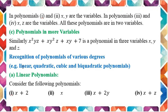Now we are moving to the degree of polynomials and how we can name them. If the highest degree of a variable is 1, then we will call it linear. Consider the following polynomials: x plus 2; x; x plus 2y; and x plus y. You can observe that in all these examples the exponent of the variable is 1. So we will call them linear polynomials.